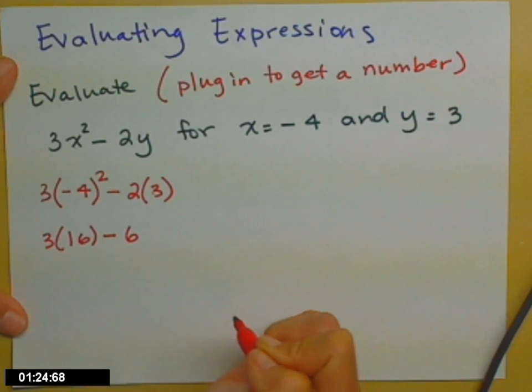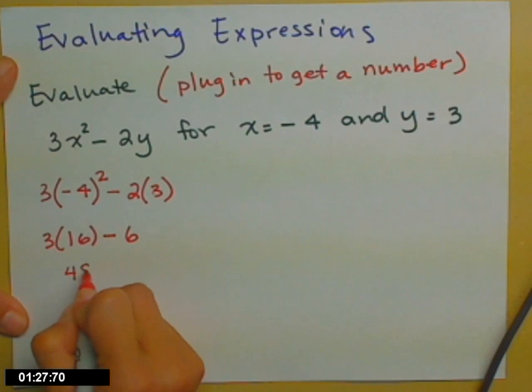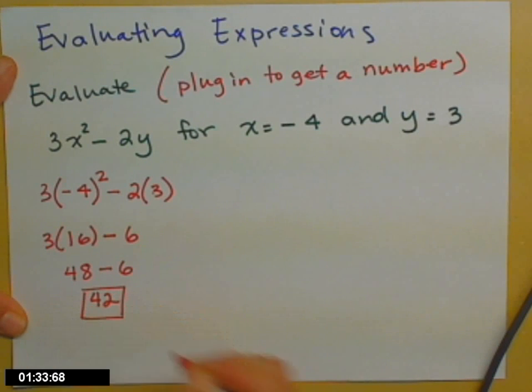2 times 3 is 6, 3 times 16 is 48, 48 minus 6 is 42.